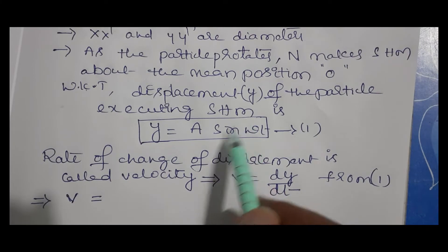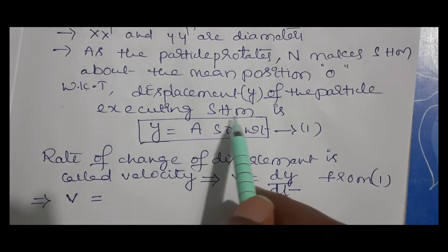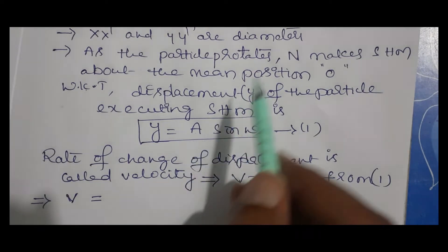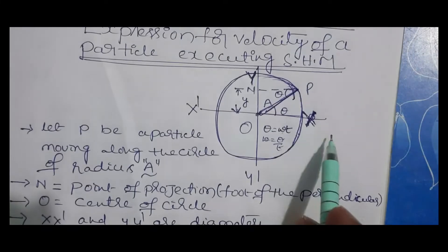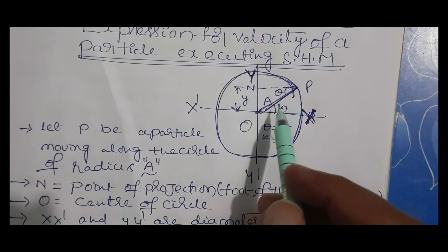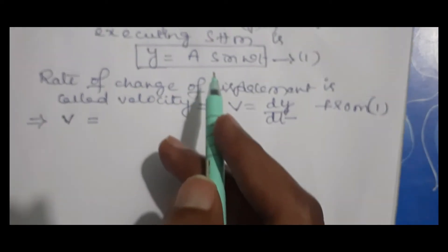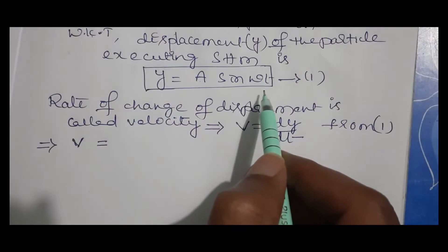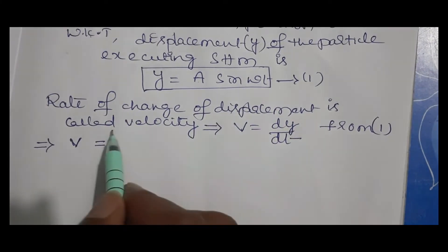We know that the displacement of the particle executing SHM — as derived in a previous video — is given by y equals A sin(ωt), where A is the radius of the circle as seen in the figure. Instead of capital A, you may also use small r for the radius. So y equals A sin(ωt).